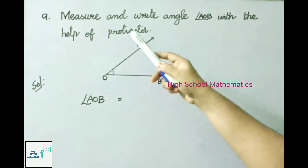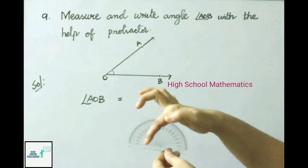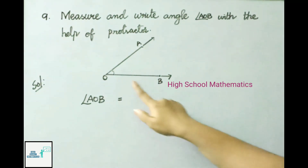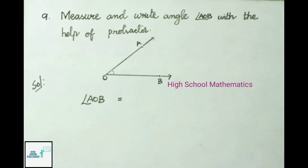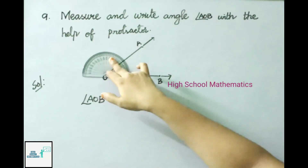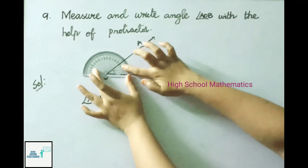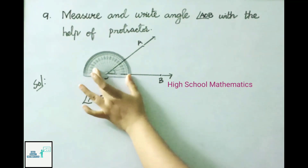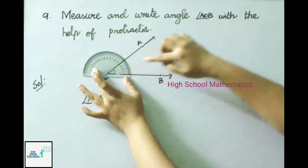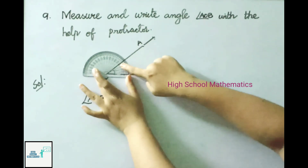Question 9: Measure angle AOB with the help of a protractor. To measure the angle, place the protractor so that its base line coincides with ray OB. Since the protractor is placed on the left side, take the zero scale from the right side and let ray OA coincide with the zero scale. The angle OA reads 40 degrees, therefore angle AOB equals 40 degrees.